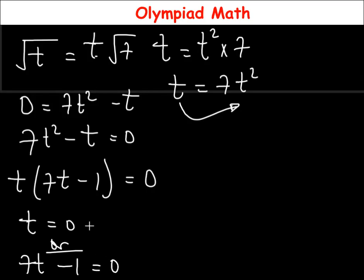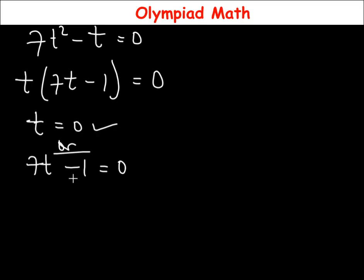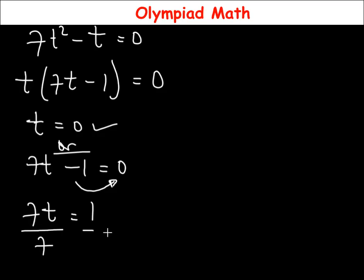We've gotten the first solution t equals 0, though we will confirm if it satisfies the equation. Moving on, from the second equation 7t − 1 = 0, move minus 1 to the other side to get 7t = 1. Divide both sides by 7, so t equals 1 over 7. This is the first method result.